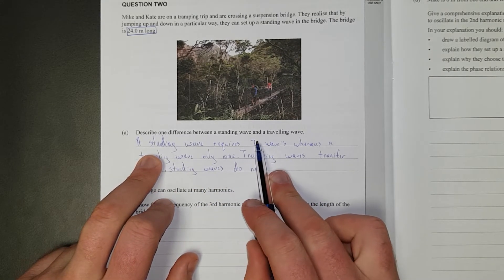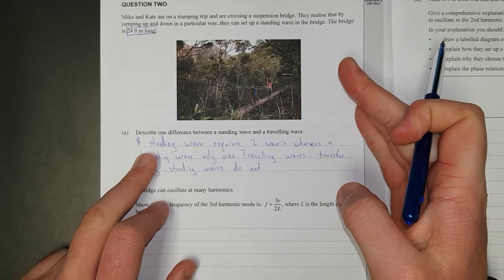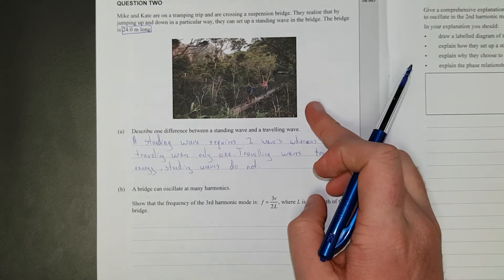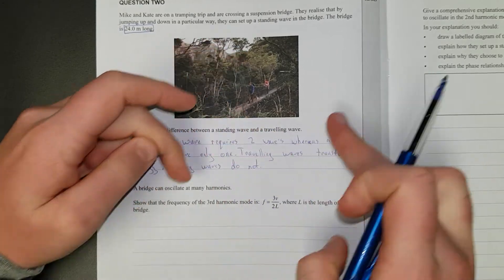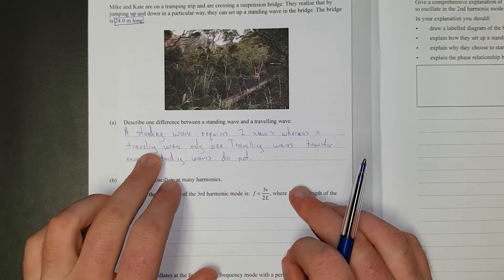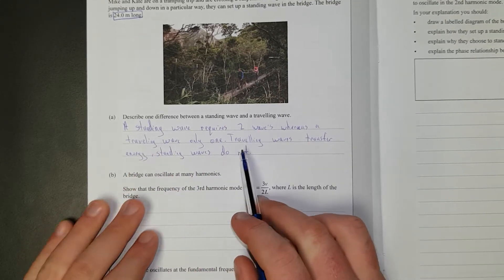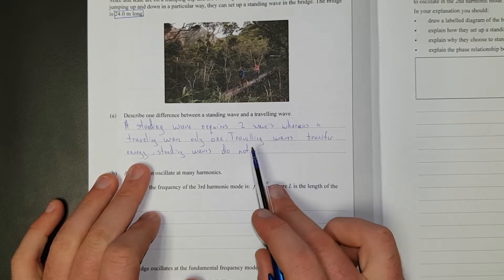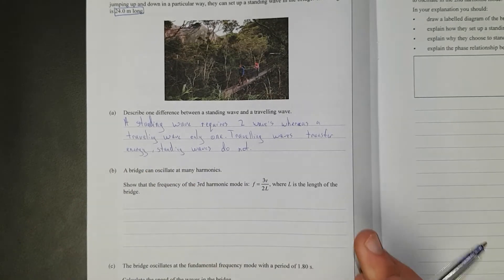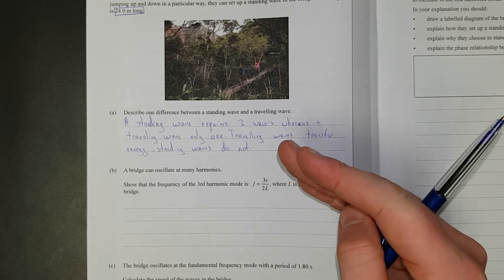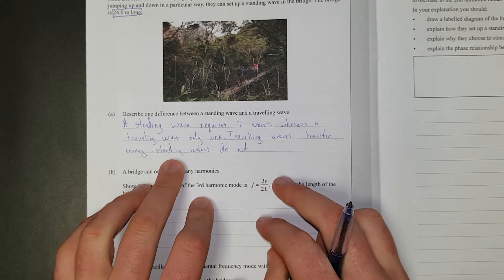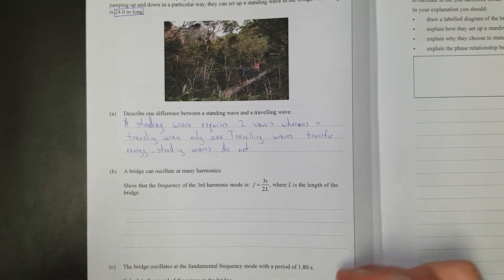So I said a standing wave requires two waves, whereas a travelling wave only one. A little more detail into that - it's correct in saying two waves, but you only need one wave source. So you really need a boundary where the wave can reflect and then come back and then superimpose on the incoming wave. Travelling waves transfer energy, standing waves do not. Standing waves can't transfer anything because they're standing.